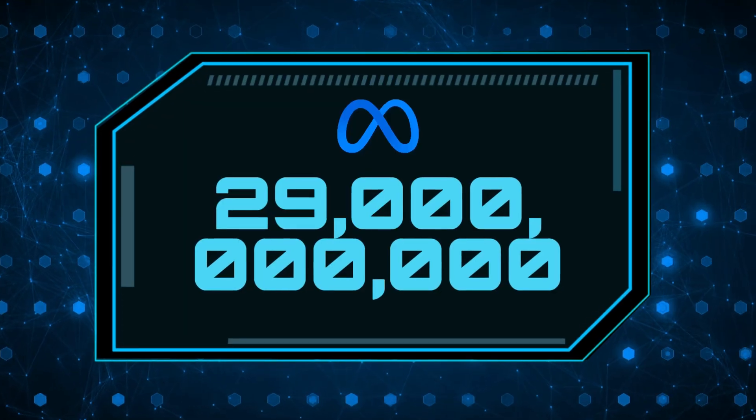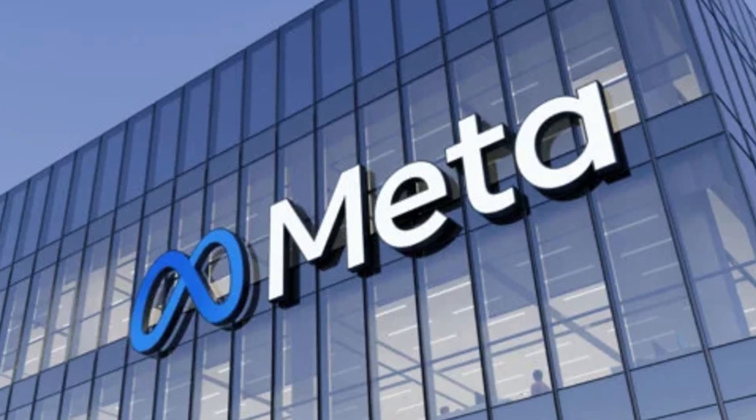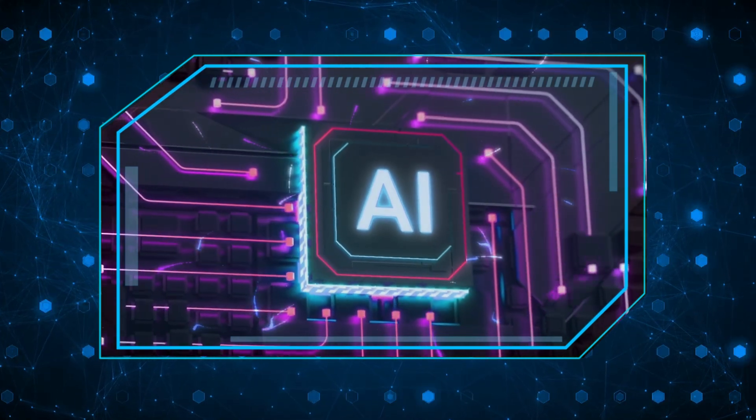When you see a $29 billion line item on a balance sheet, you know something's about to change. Meta isn't just buying more GPUs. They're building an AI-first compute grid designed to feed next-gen foundation models at unprecedented scale.